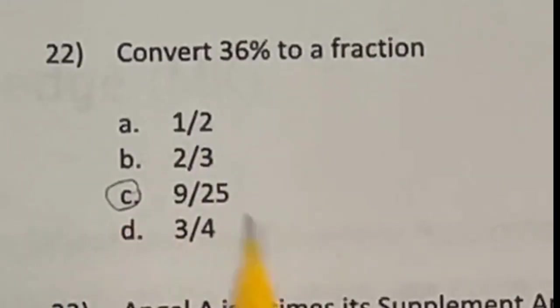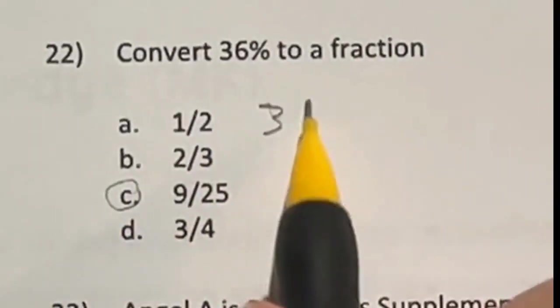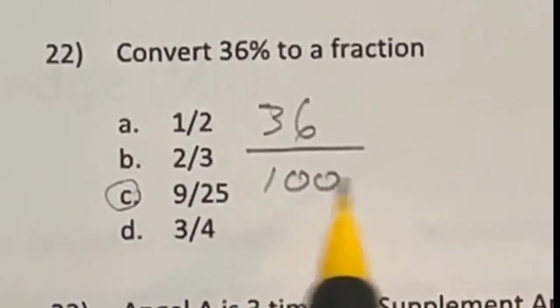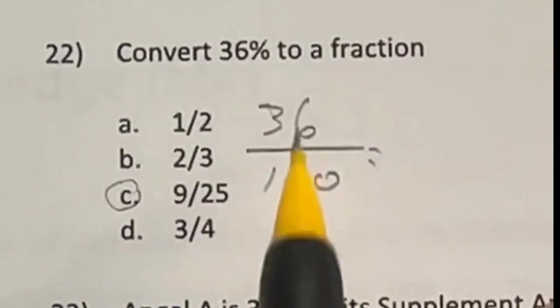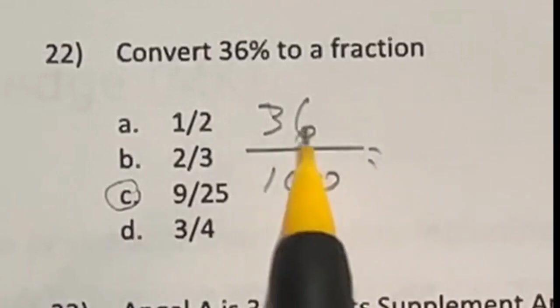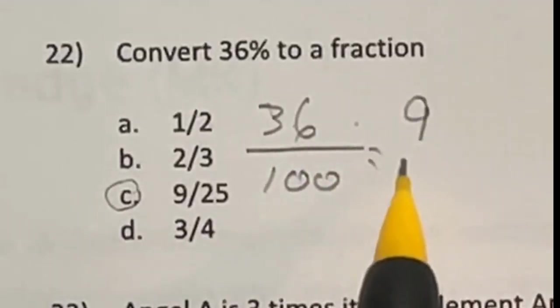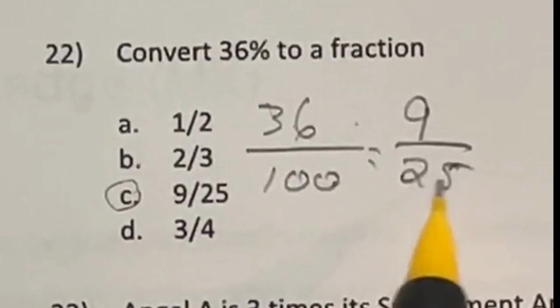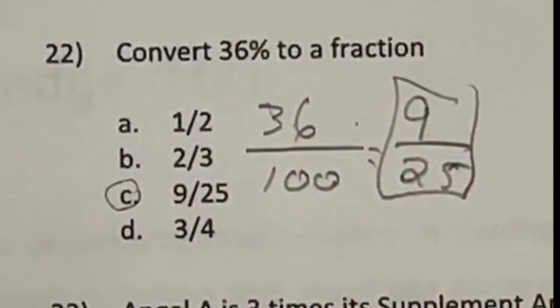So the answer here is going to be C. The long way of doing it would be doing 36 over 100 and then reducing that fraction. Well, both of these are divisible by 4. 36 divided by 4 is 9, and 100 divided by 4 is 25. Meaning 9 over 25 is our answer.